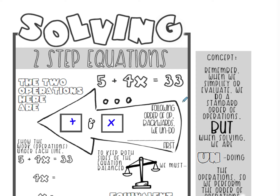When we do two-step equations, we have to do order of operations backwards. So following order of operations backwards means we're going to undo addition first. We're working backwards because it's an equation.